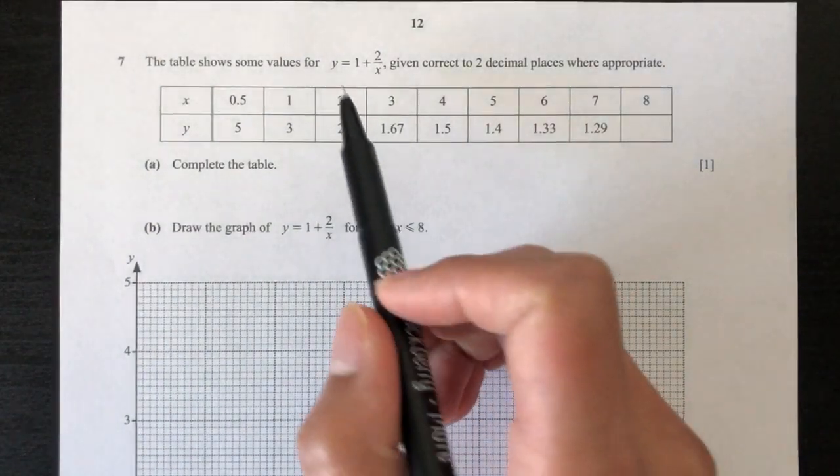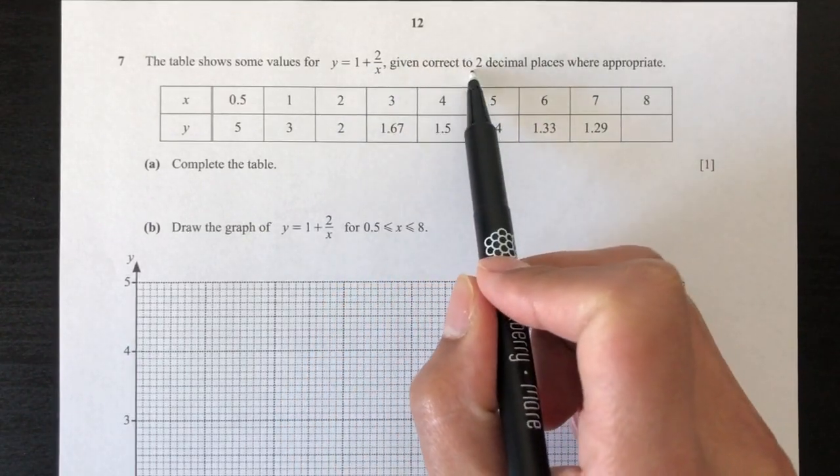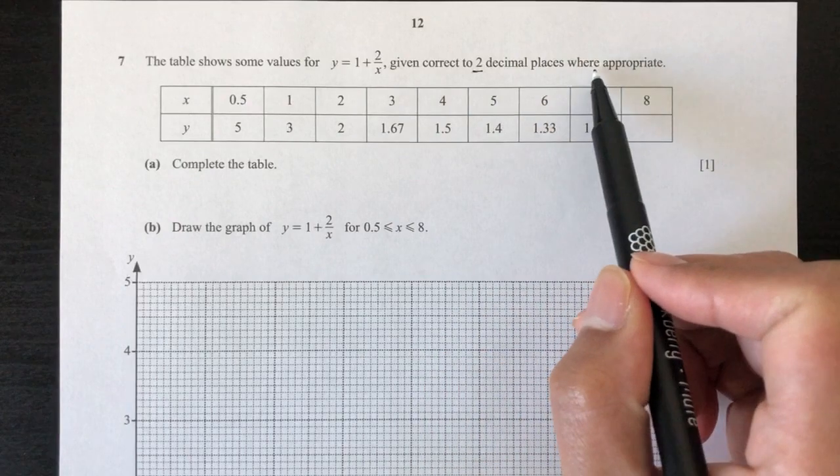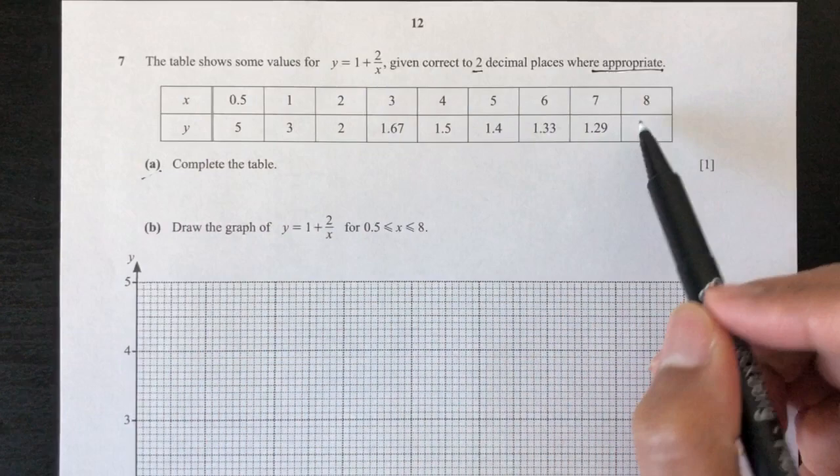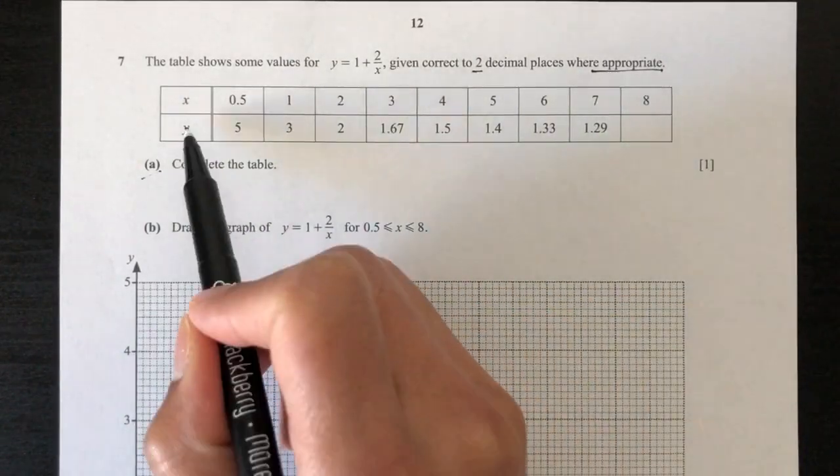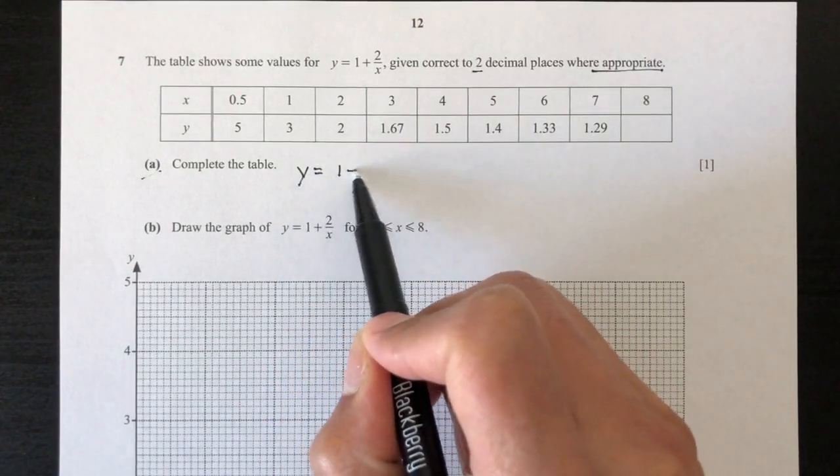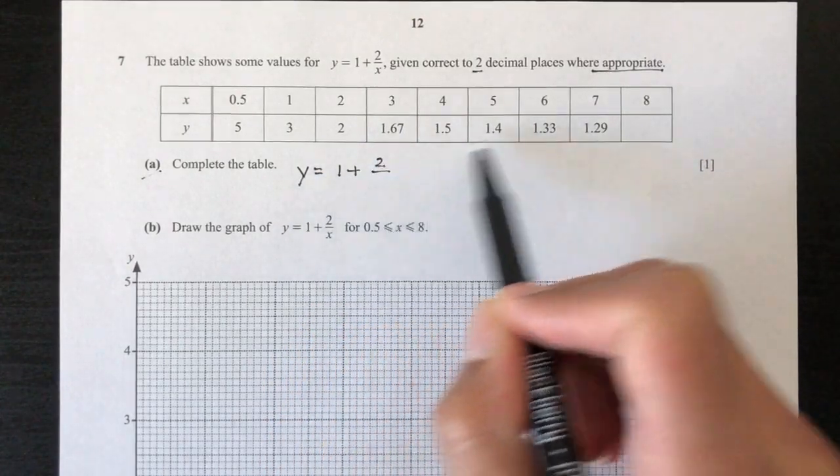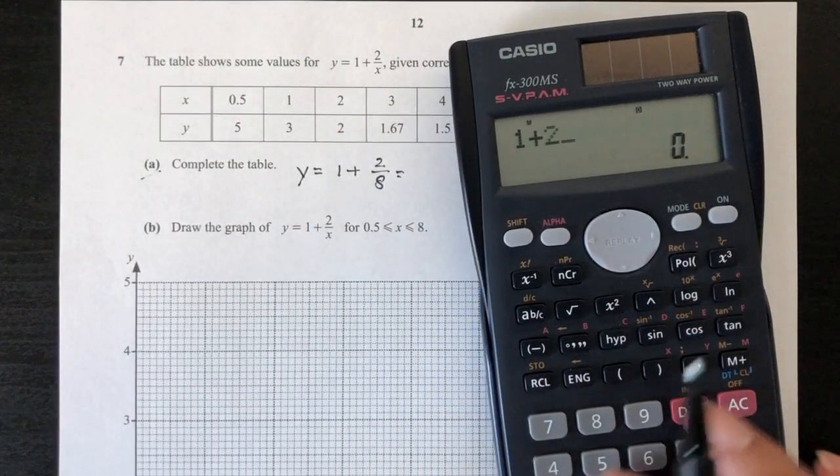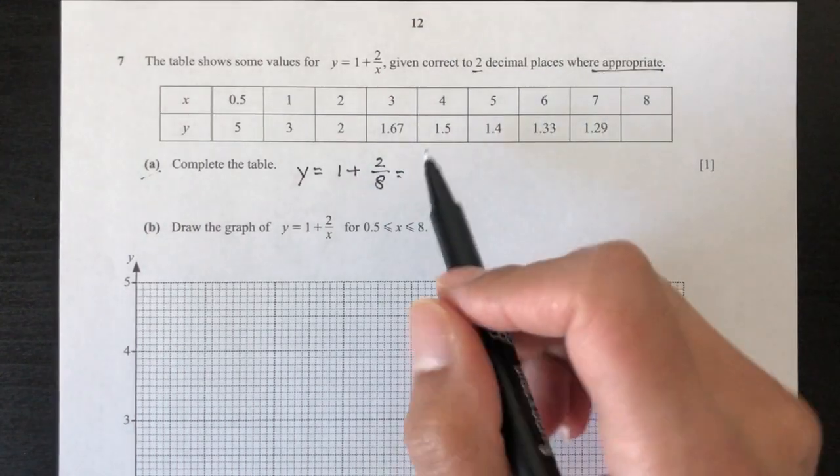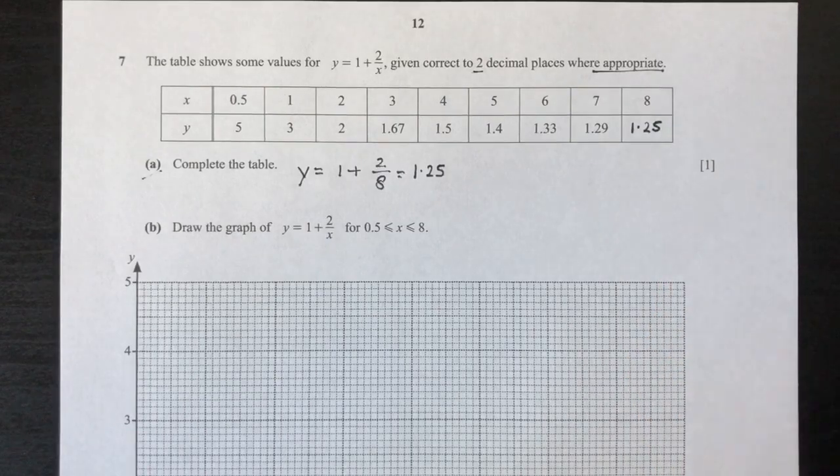The table shows some values for y = 1 + 2/x, given correct to 2 decimal places where appropriate. Question number 1: Complete the table. As you can see here, we have no values. This is your value of y when x equals 8. So y = 1 + 2/8. Let's see what we have for this one. That should be 1.25. That will be your value for y. That is part 1 done.